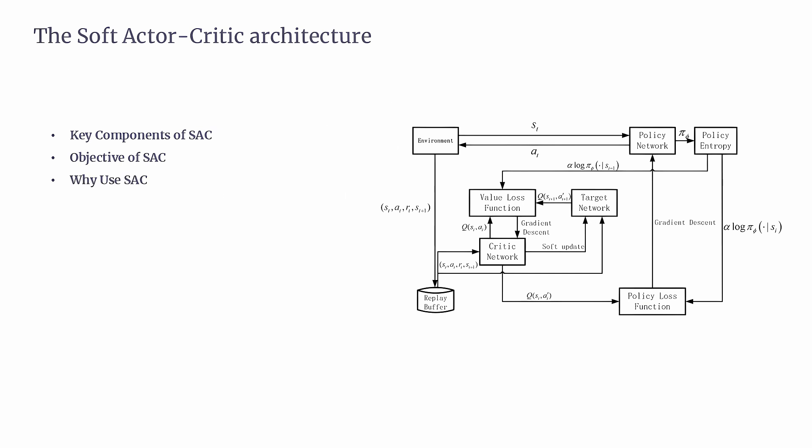Why use SAC? First, better exploration: thanks to entropy maximization, the agent explores a wider range of actions, which can lead to finding better strategies. Second, efficient learning: it reuses data from the replay buffer, making it much more sample efficient than algorithms like PPO. Third, stability: with two Q-networks, SAC reduces overestimation bias, ensuring smoother learning. It's also robust to variations in settings like random seeds or hyperparameters.